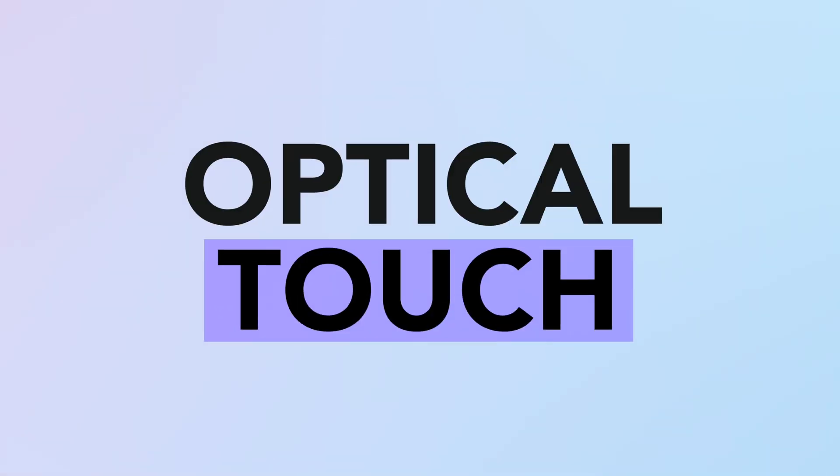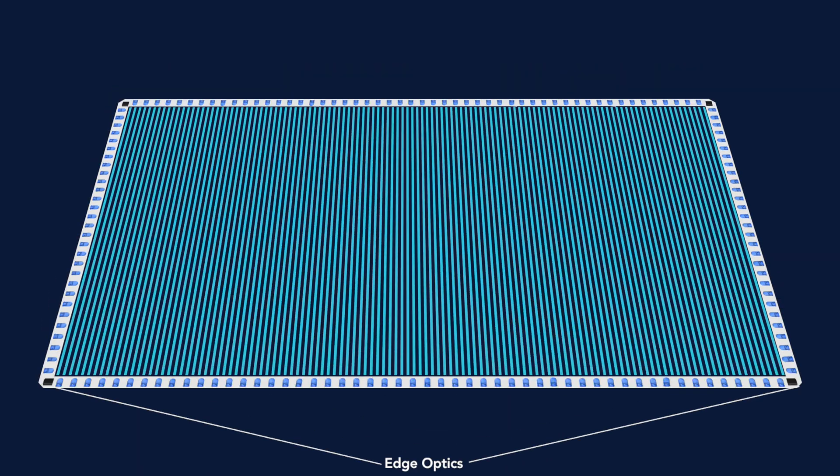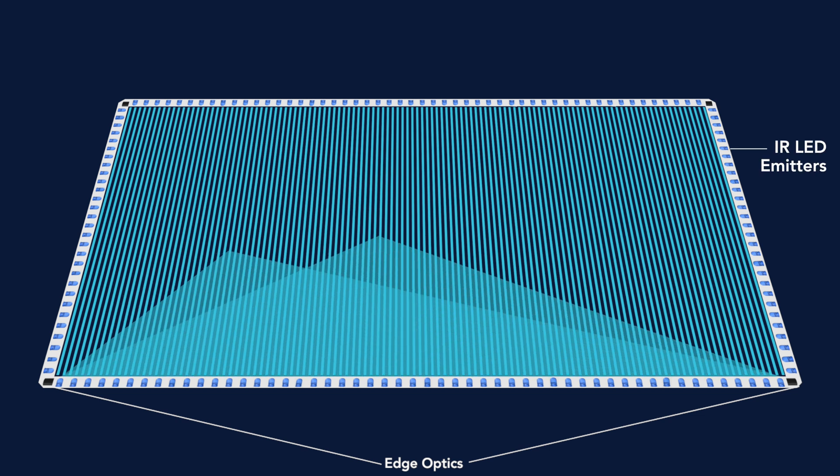The digital board that uses optical touch technology has edge optic sensors embedded between the IR LED emitters. These sensors allow the rays to pass in a crisscross fashion, making them very close together.